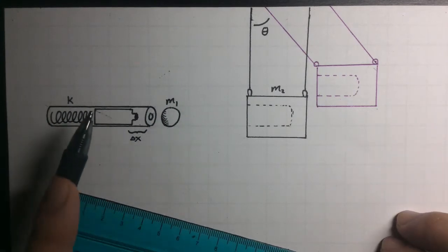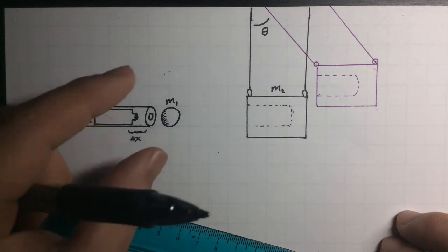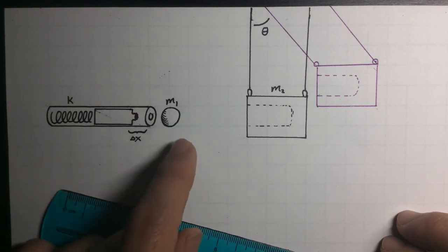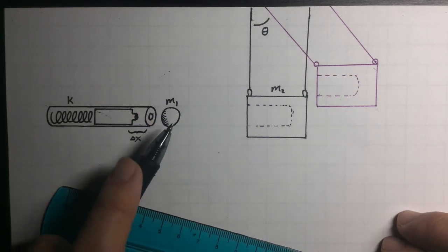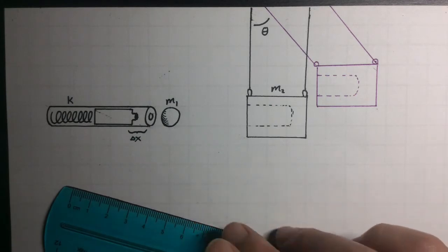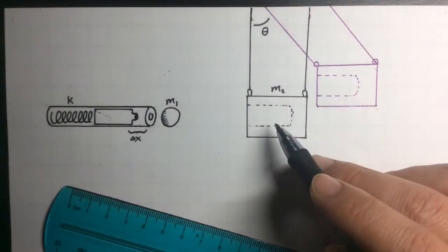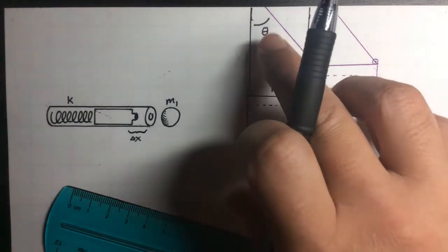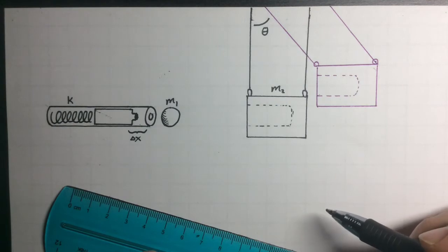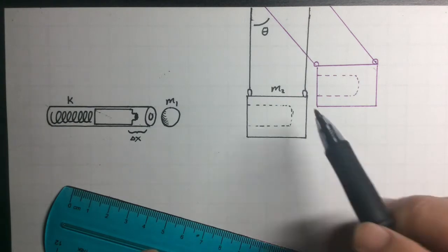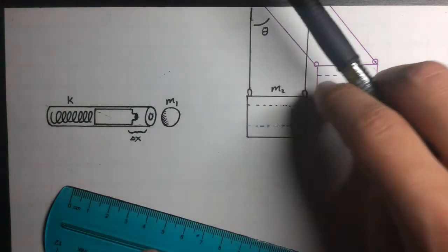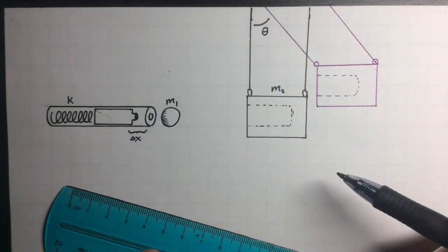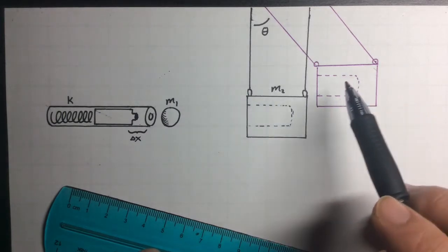We've got the spring gun. It's going to have a K constant. It's going to be pulled back a certain distance X. It'll throw this hammer into the mass M1, this ball bearing that we have. M1 is going to fly to the right with some amount of kinetic energy into M2. It's going to get stuck inside of it. Because of the momentum and energy transfer, it's going to swing upwards, and it's going to make some kind of angle theta with the vertical here.